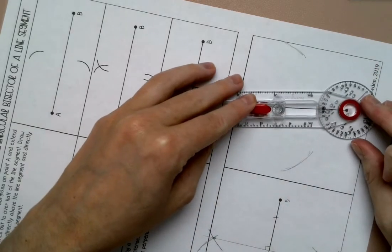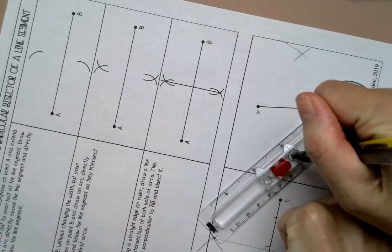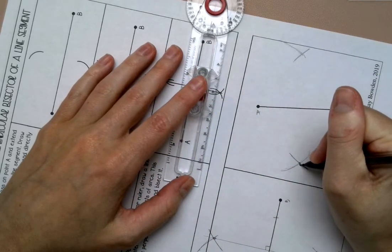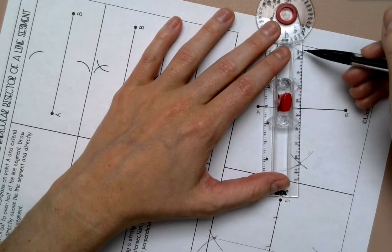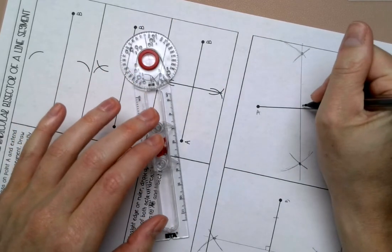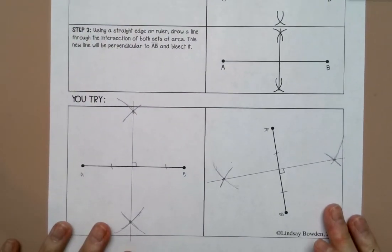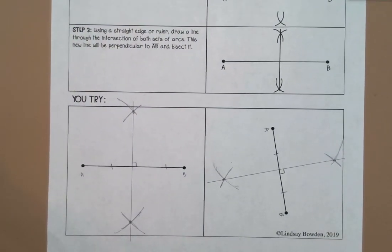And then I'm going to move it to B. Above and below. Where those two intersect, I will draw a straight line. And that is how you draw a perpendicular bisector of a line segment.